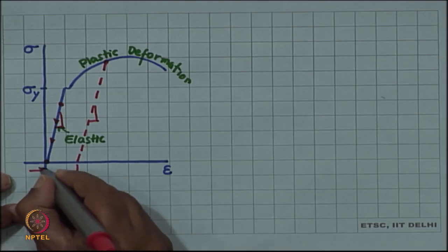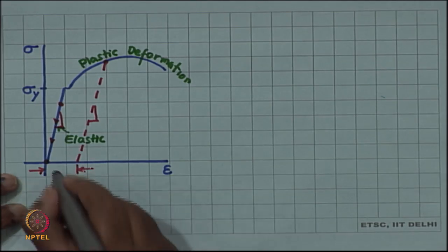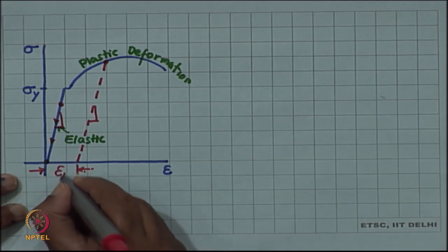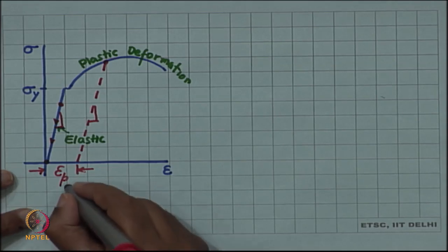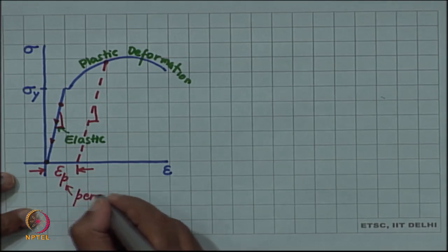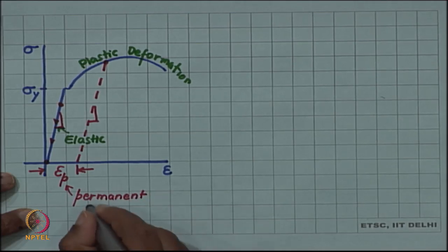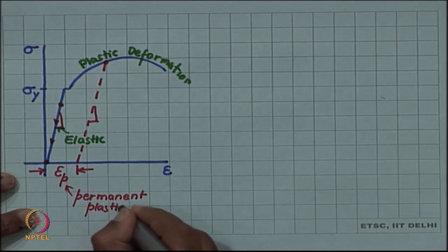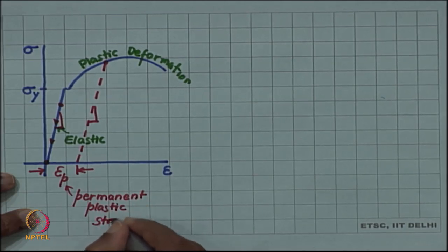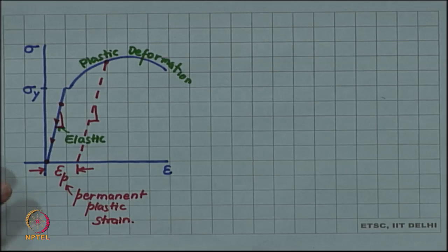This is the plastic strain which is left in the material. This is permanent plastic strain.